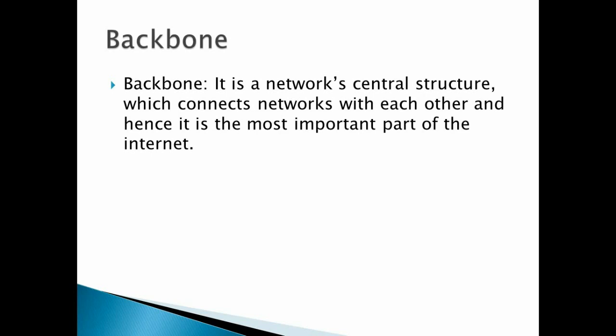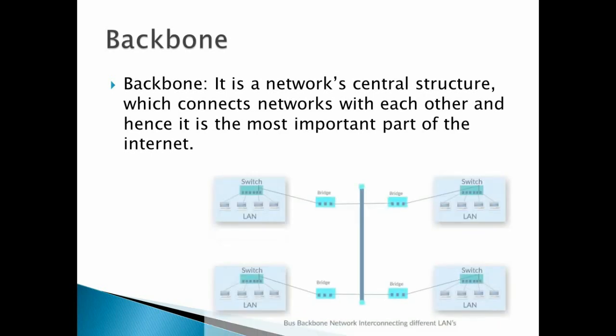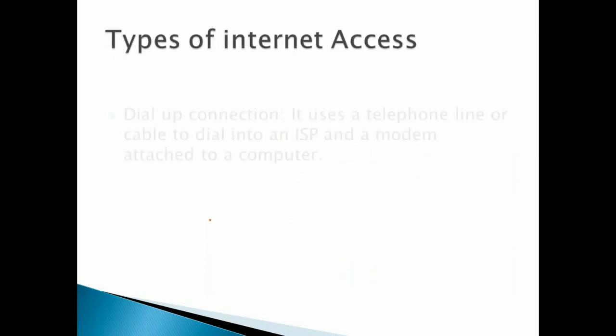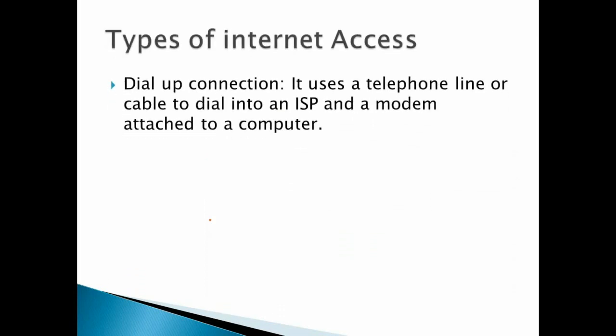Backbone is the network's central structure which connects networks with each other, and hence it is the most important part of the internet. The blue color straight line shown is known as the backbone. On the left and right sides you can see bridges — some devices named as bridges. Through the network backbone, they are connected to a bridge, and to that bridge switches are connected, and to the switch LAN connections are connected. So backbone devices connect different networks.